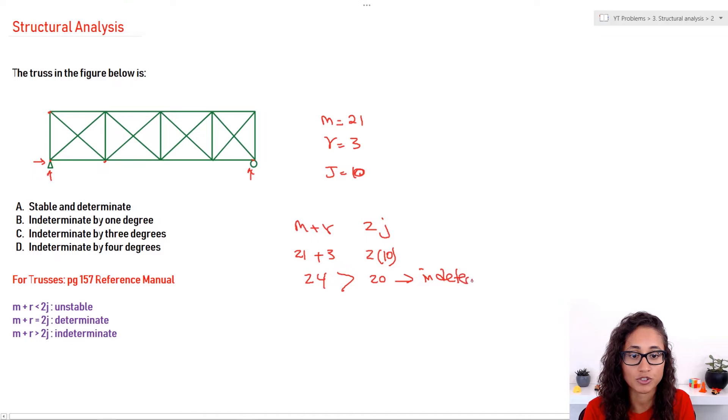But we need to determine by how many degrees, right? So, it's really easy. All you gotta do is just 24 minus 20. This gives you 4. So, you have an indeterminacy by 4 degrees. That's it. It's really simple, guys.